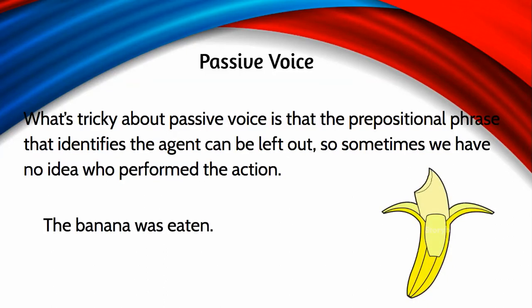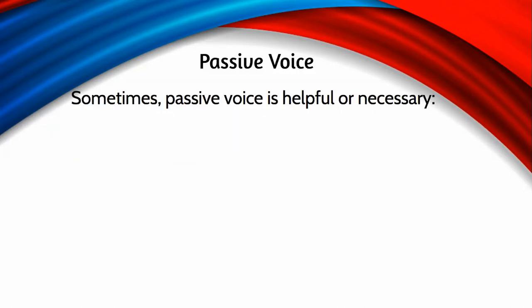For example, 'The banana was eaten' — maybe we just want to emphasize the fact that a banana got eaten and who did it doesn't matter. But sometimes it does matter; sometimes we really want to know who did the eating, but in a passive voice sentence we don't know — the agent has just disappeared. Sometimes this is actually a good thing.